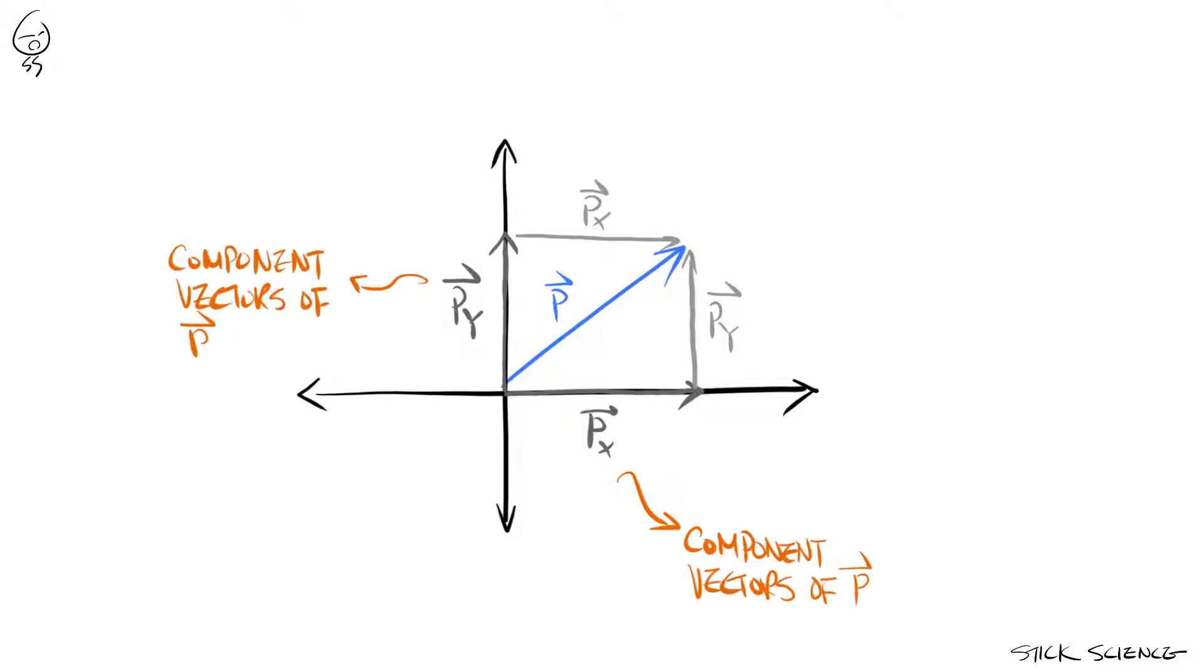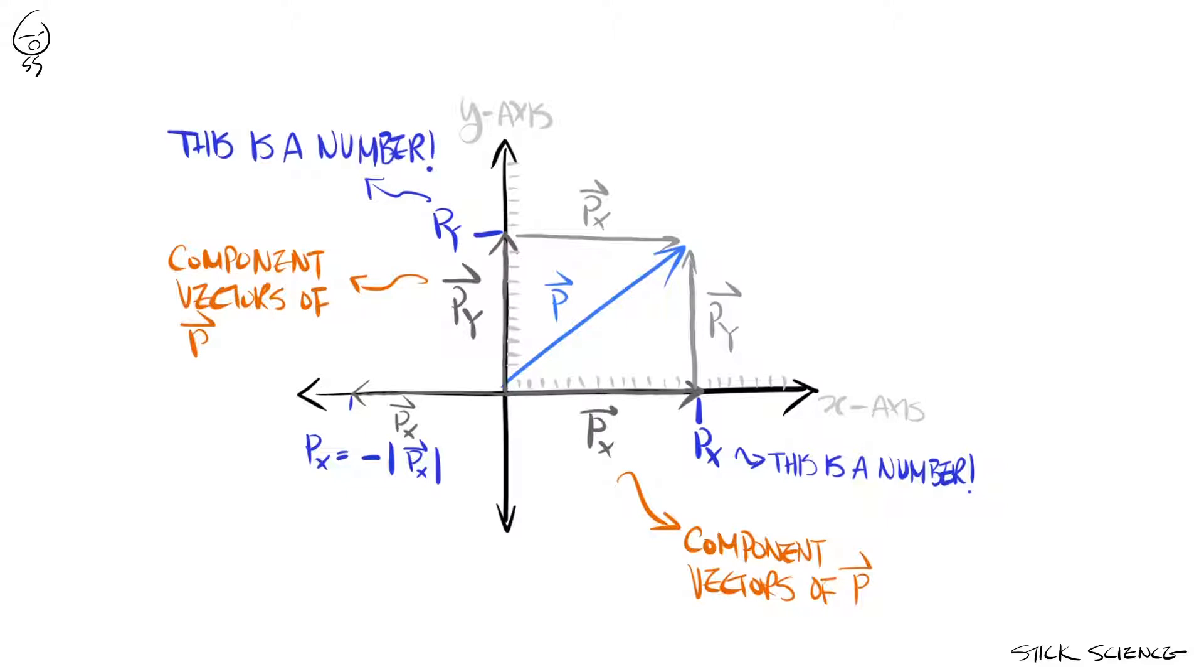Now because vectors px and py are each on the x and y axis of the coordinate system respectively, we know what their directions are. So as a consequence, we can express these vectors with a single number. For vector px, let's define a number which has the same value as the magnitude of vector px and call it number px. In case vector px points towards the negative direction, we'll define the number px to be the negative of the magnitude of vector px, keeping in mind that the magnitude of a vector is always positive. The same goes for vector py and we can describe it with the number py.